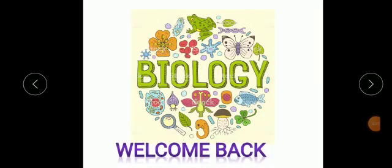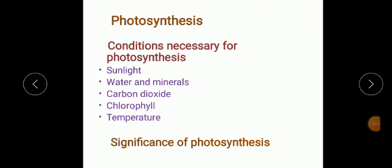Students, welcome back to the biology class. We are discussing chapter plant life. In our previous classes we learned about photosynthesis — the process by which green plants are able to make their own food. We also discussed various conditions required for photosynthesis: sunlight, water and minerals, carbon dioxide, chlorophyll, and temperature. We also discussed the significance of photosynthesis.